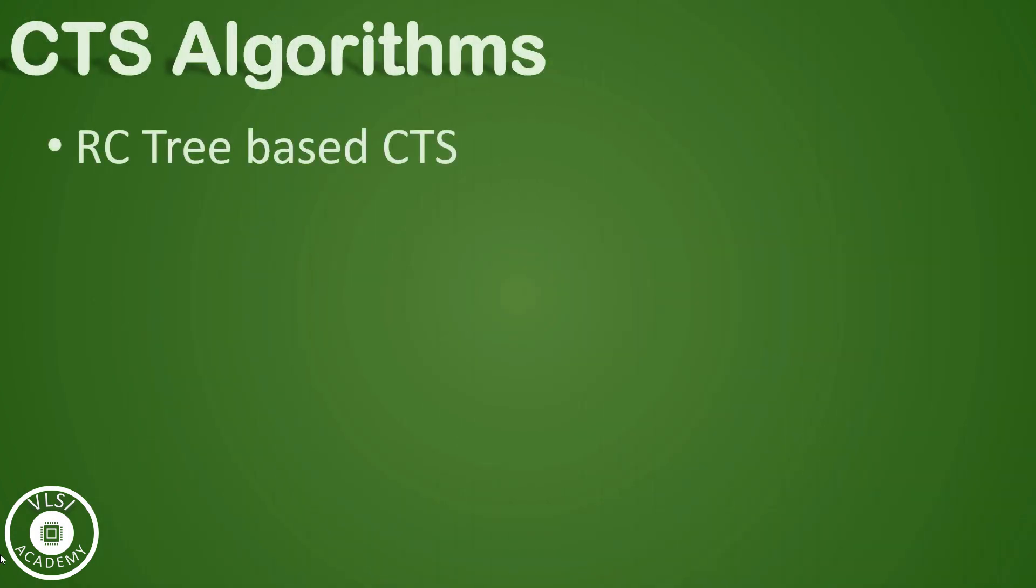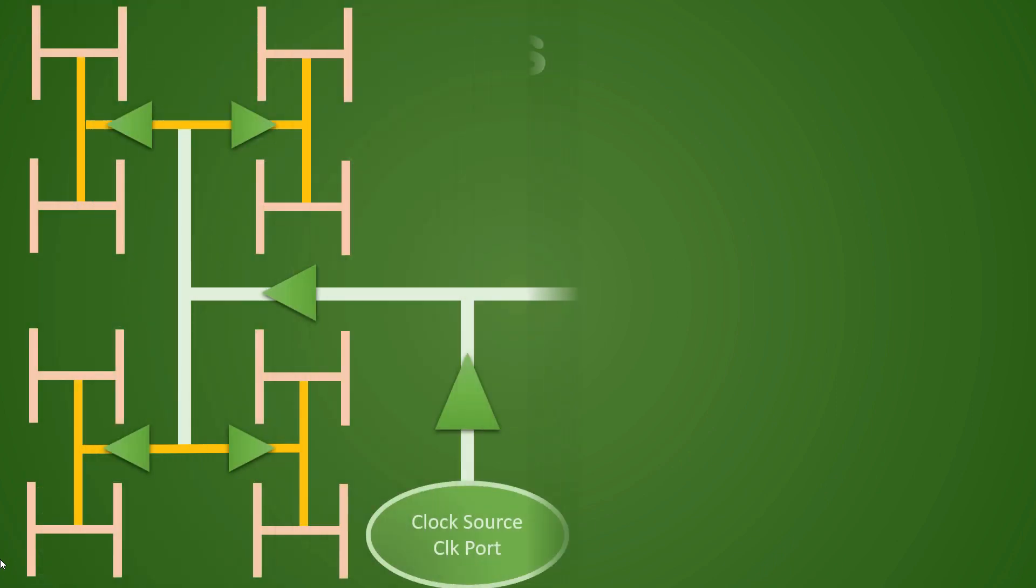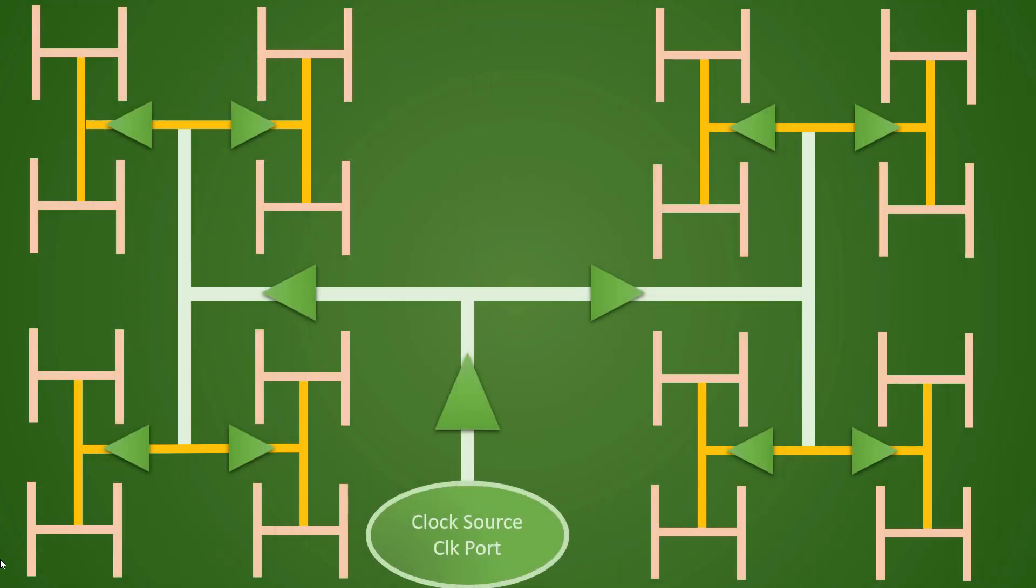In our previous video we discussed these configurations for building clock tree synthesis and we looked at the H bridge which is most commonly used configuration for CTS for balancing the skew and latency. Now let us understand CTS spec file information.